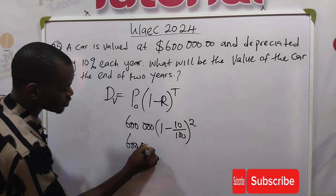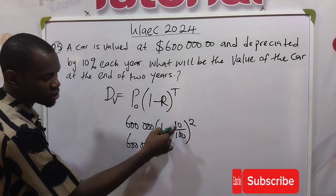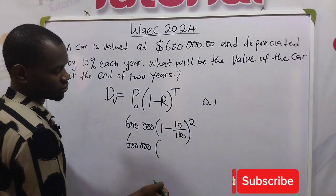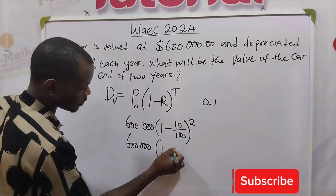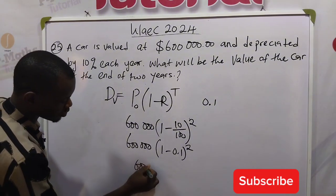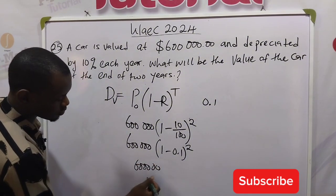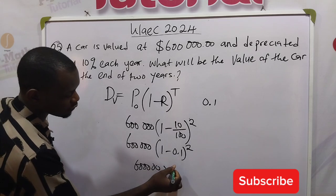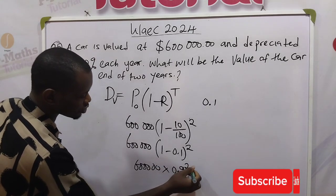So this will give us 600,000 into 10 over 100 is 0.1, right? So we have 1 minus 0.1 raised to the power of 2. This is 600,000 times 1 minus 0.1 will give us 0.9 raised to the power of 2.